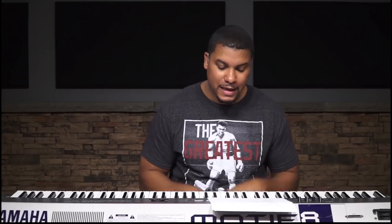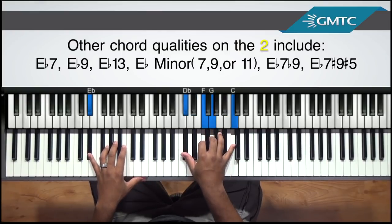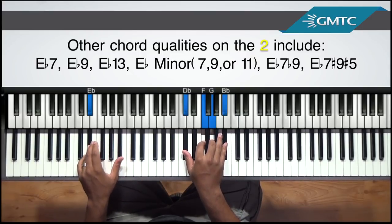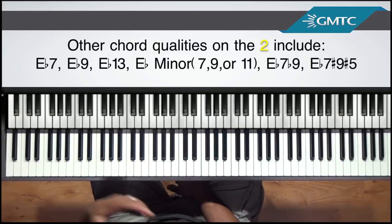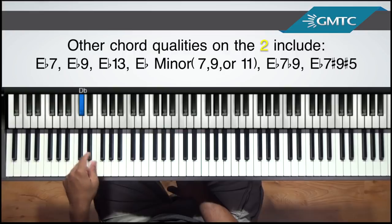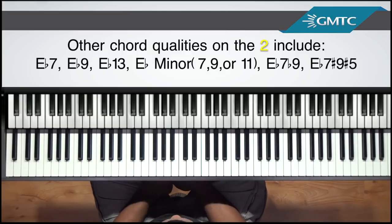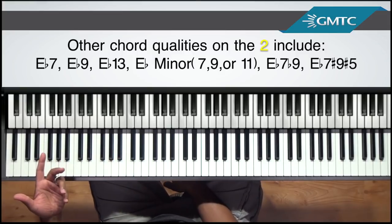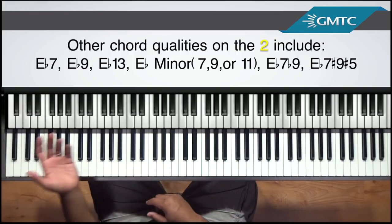Those are some of the options on the one. When we go to the two, you can play a dominant chord there too. So you can play an E-flat 7, an E-flat 9, or an E-flat 13 — but it all depends on the context. Basically the same way I approach the one — dominant 7, dominant 9, dominant 13 — all those same types of things apply on the two. You can use a dominant chord on the two, but it all depends on where you're going.